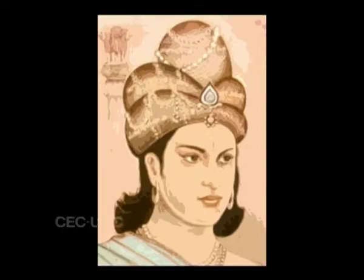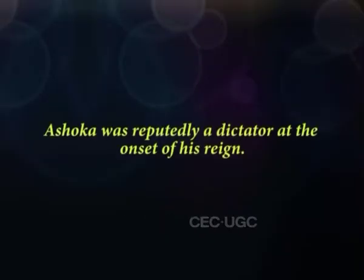Ashoka ascended to the throne in 269 BC, inheriting the empire established by his grandfather Chandragupta Maurya. Ashoka was reputedly a dictator at the onset of his reign. Eight years after his accession, he campaigned in Kalinga where, in his own words, a hundred and fifty thousand people were deported, a hundred thousand were killed and as many as that perished. After this event, Ashoka adopted Buddhism in regret for the loss of so many lives. Buddhism did not become a state religion but with Ashoka's support it spread rapidly.